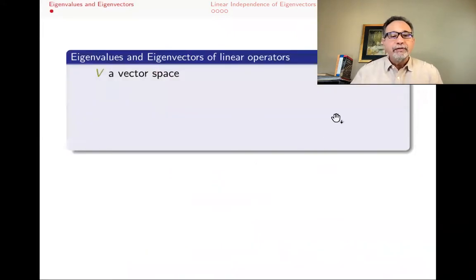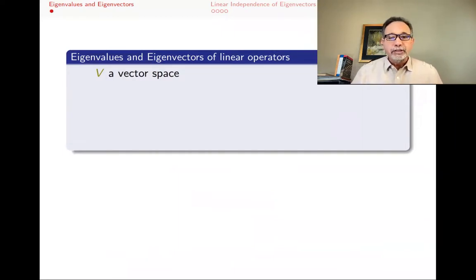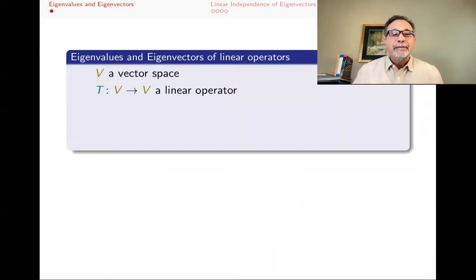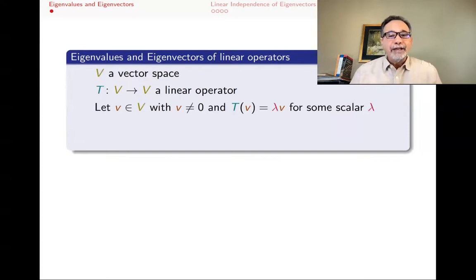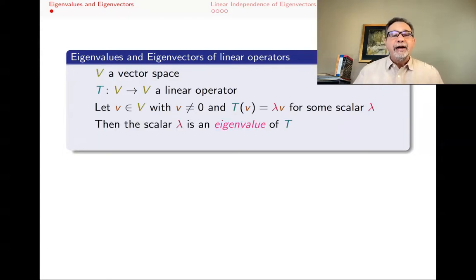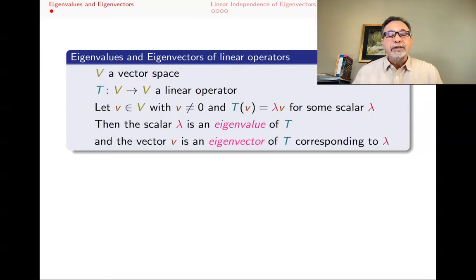Let me remind you of eigenvectors and eigenvalues. I will do this for linear operators, but the same definitions will work for matrices as well. So V is a vector space, and T is a linear operator from V to V — a linear transformation from a vector space to itself. If you have a vector in that vector space that's not the zero vector, but when you apply T to it you get a multiple of itself — lambda times V, where lambda is some scalar — then that lambda is called an eigenvalue of that linear transformation, and V is called an eigenvector corresponding to lambda.